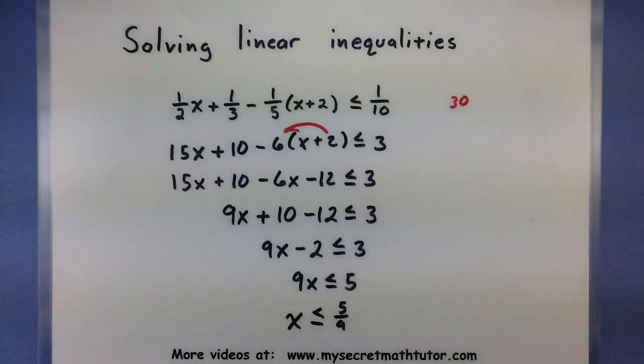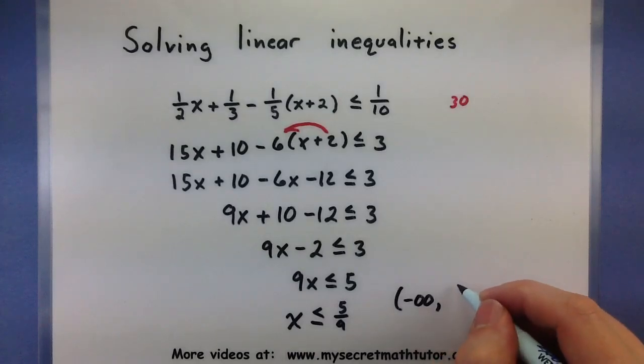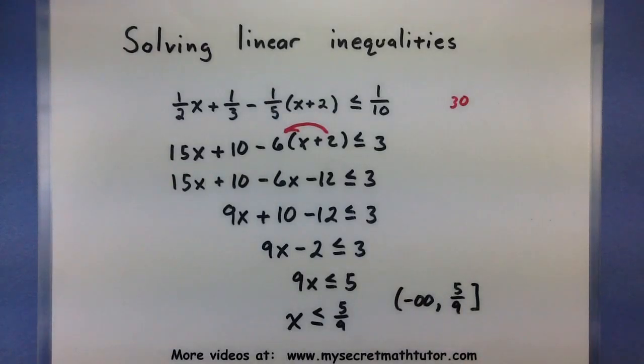Okay. Again, you could probably package this up into interval notation. So x is some number from negative infinity all the way up to 5 ninths. Because it says or equals to, we can include the 5 ninths.